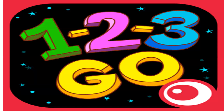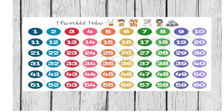If you remember, children, in the previous class we finished our counting 1 to 60. First of all we will revise our counting 1 to 50, then we will start the next numbers. Are you ready? Which number is this? One. Which number is this? Two, three, four, five, six, seven.